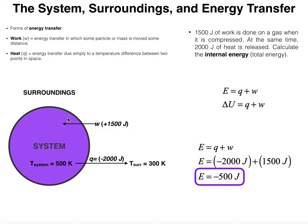Let's do an example problem. I have a spherical container with a gas inside it — that gas is my system, and everything outside is the surroundings. The problem: 1,500 joules of work is done on a gas when it is compressed. Whenever a gas is compressed, that's work done on the gas; if the gas were to expand, that would be work done on the surroundings. At the same time, 2,000 joules of heat is released. Calculate the internal energy — also called the total energy of the system, or E.